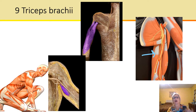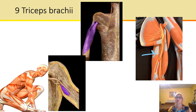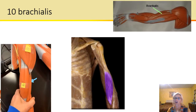Next we have the triceps — you're probably familiar with biceps and triceps — but we've got to add the brachii. Triceps means three-headed. This extends the forearm, and the long head will also extend and adduct the arm.